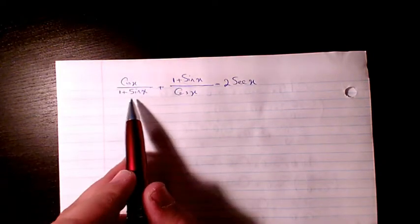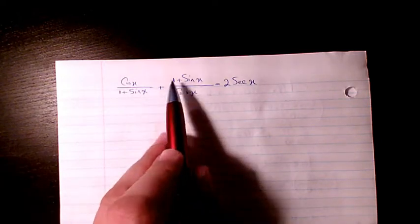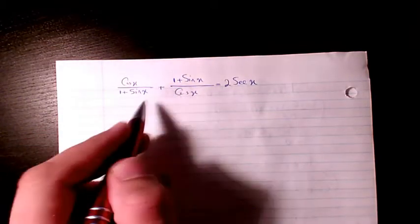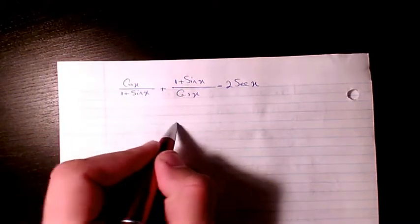So in this example I have cosine x divided by 1 plus sine x plus 1 plus sine x divided by cosine x equals 2 secant x. So the first thing I do is start from the left hand side.